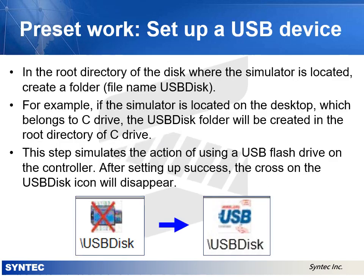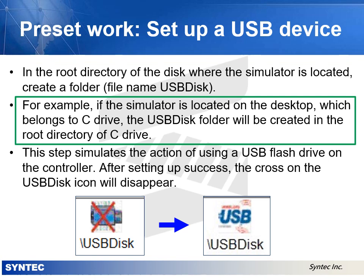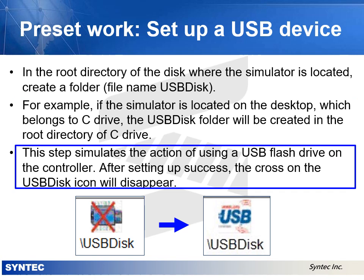The first step in the preset work is setting up a USB device. In the root directory of the disk where the simulator is located, create a folder with the file name USB disk. For example, if the simulator is located on the desktop, which belongs to C drive, the USB disk folder will be created in the root directory of C drive. This simulates using a USB flash drive on the controller. After setting up successfully, the cross on the USB disk icon will disappear.